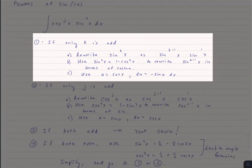If only k is odd, you're going to rewrite sine to the k power as sine to the k minus 1 of x times sine of x. Notice I wrote the 1 in there just so we could explicitly think about what's happening with the exponents in that case. For that sine to the k minus 1 x, we're going to use the formula sine squared x equals 1 minus cosine squared x. That's our Pythagorean identity. We're going to rewrite that in terms of cosine.